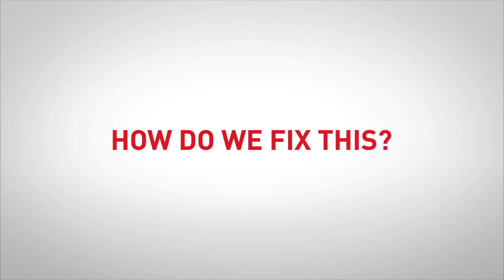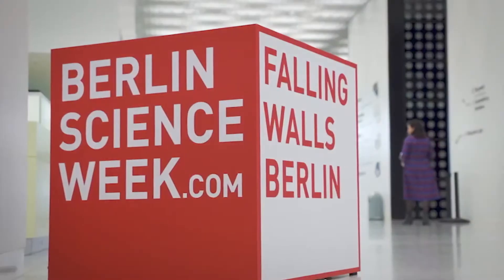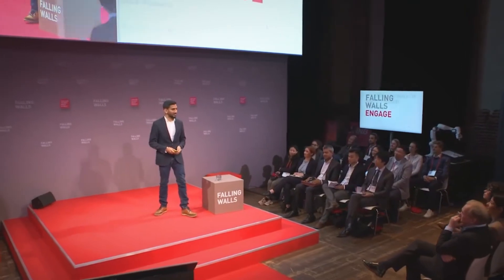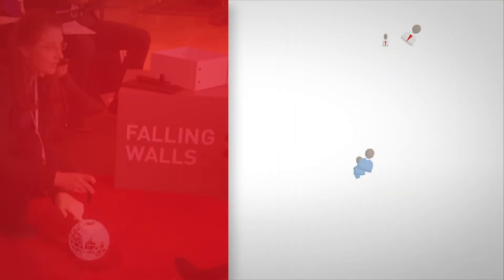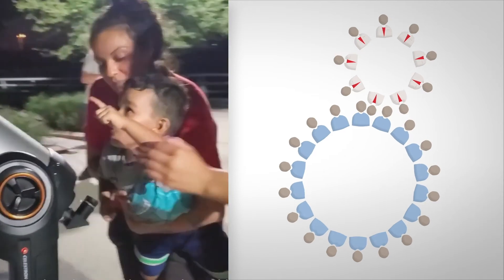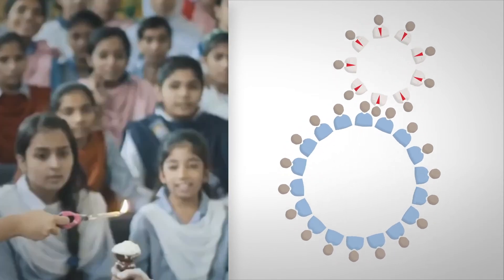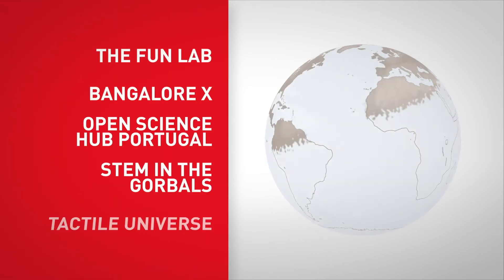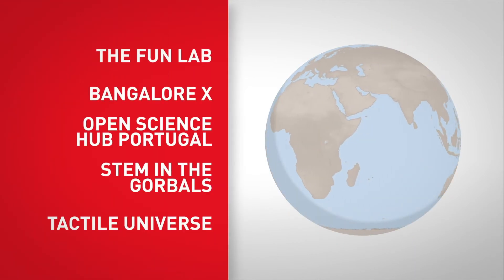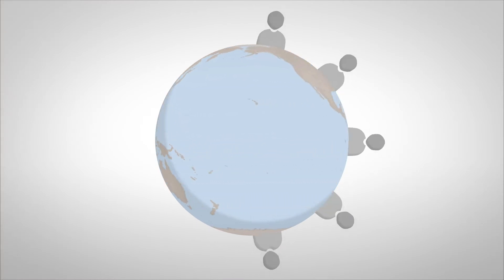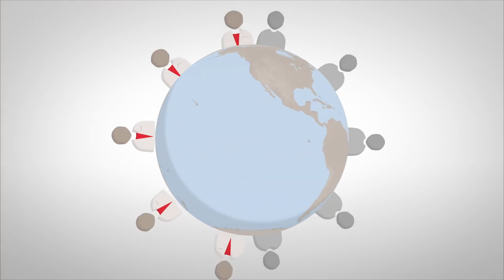So how do we fix this? Falling Walls Engage believes that changing the culture of science starts with science engagement. That means creating a wide variety of interactions between the public and the scientific community to help foster a more inclusive and mutually beneficial relationship. These five programs from around the world have important lessons to share. Each employs unique methods to help close the gap between excluded groups and the scientific community.